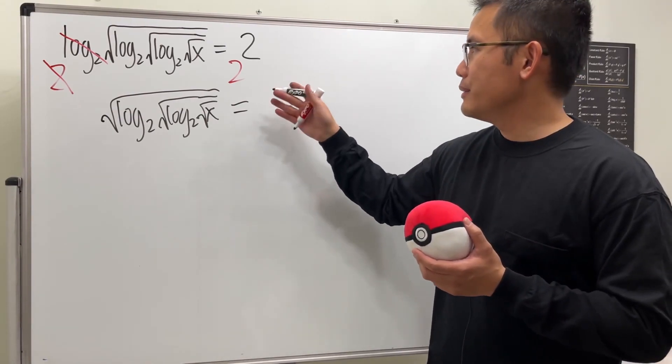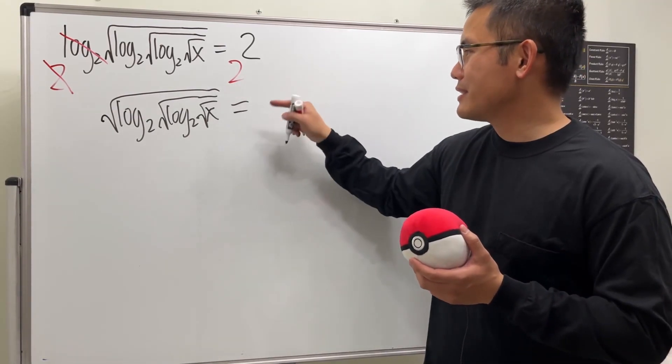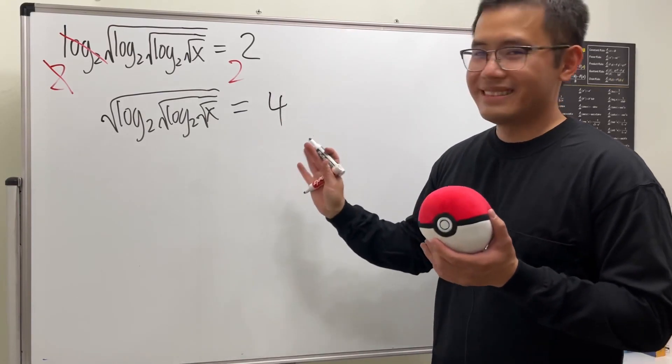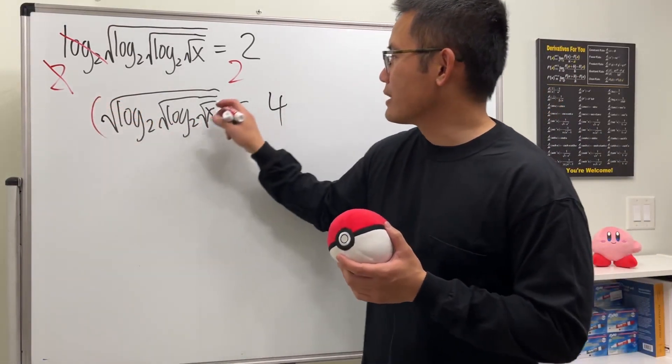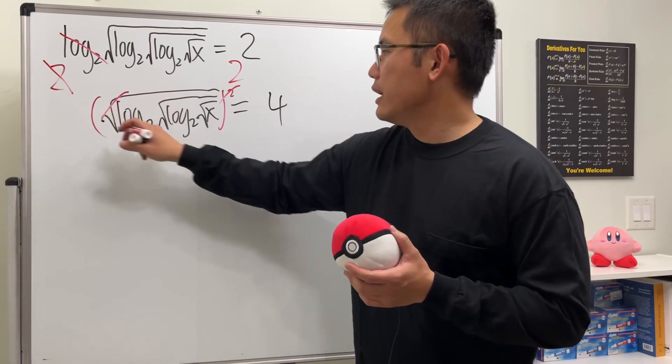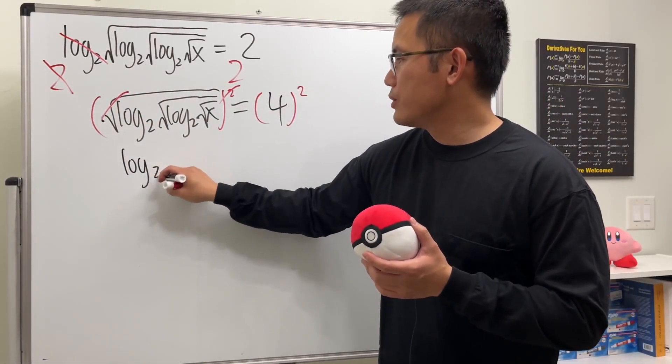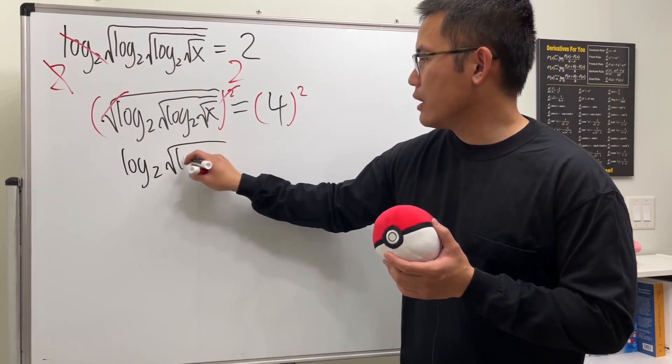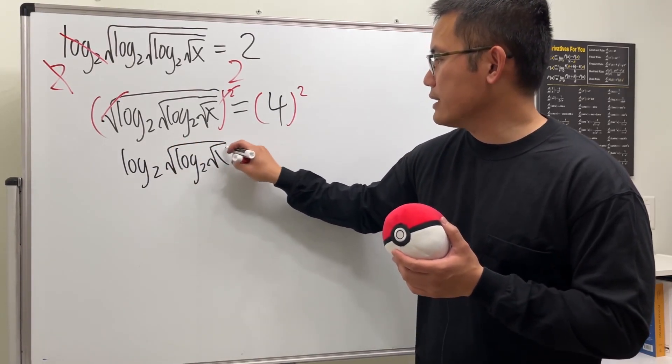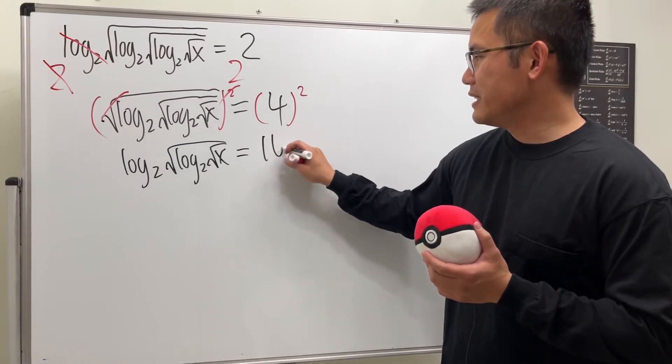So this is 2 to the second power which is equal to 4. Then I'm going to just square both sides to get rid of the square root, and of course we do the same thing here. So we get log base 2 of the square root of log base 2 of the square root of x being equal to 4 squared which is 16.